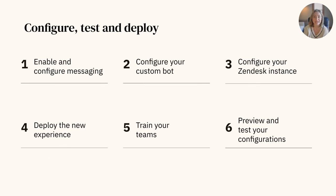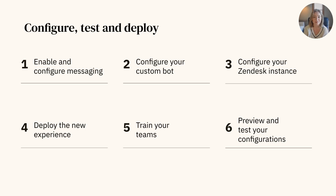Now that you've learned and planned, it's time to get messaging up and running. We want to ensure you know what it takes to go from the planning to the execution phase, starting from enabling messaging on your account all the way to deploying the experience on your website or help center. First, you'll need to enable and customize messaging, which can be done in a few quick and simple steps. Next, you'll configure your custom bot — we recommend turning on bot-enabled messaging in the Admin Center to help with information gathering and streamline ticket routing.